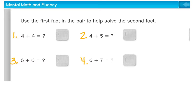I want you to use the first fact in the pair to help you solve the second. On your whiteboard, please write what 4 plus 4 is. It's 8. So then what would 4 plus 5 be? 5 is 1 more than 4, so 1 more than 8 would be 9. What's 6 plus 6? 12. And 7 is 1 more than 6, so 6 plus 7 would be 13.